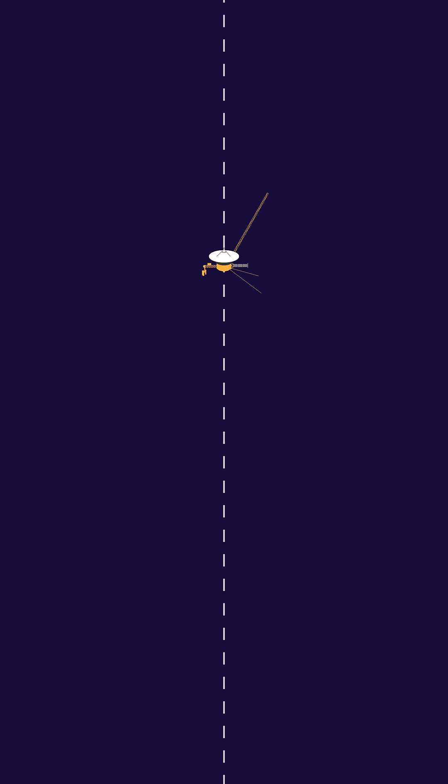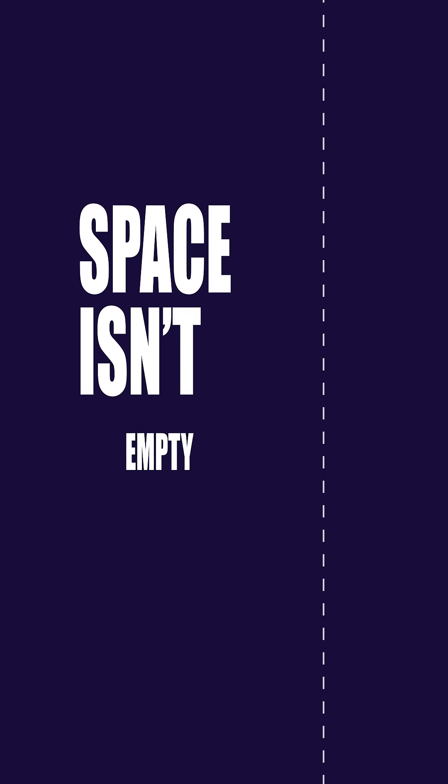Without gravity we would just go in a straight line. But space isn't empty. There are things like a planet that pulls on us with its gravity, curving our trajectory.